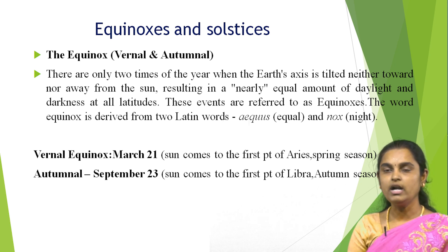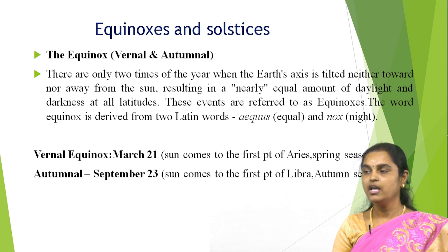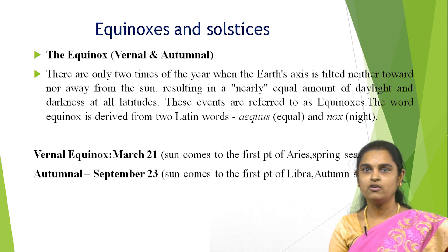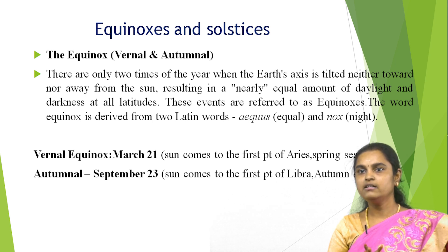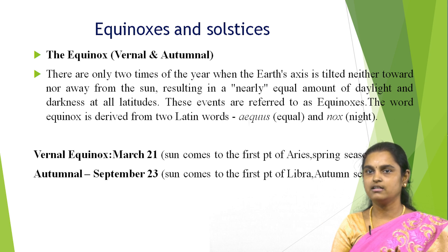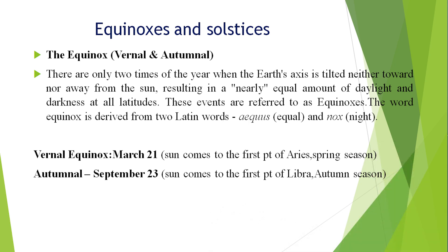Equinoxes occur at the two times of year when the earth's axis is tilted neither towards nor away from the sun, resulting in nearly equal amounts of daylight and darkness at all latitudes. The word equinox is derived from the Latin words for equal and night. The vernal equinox falls on March 21, when the sun comes to the first point of Aries during spring season. The autumnal equinox falls on September 23, when the sun comes to the first point of Libra during autumn season.